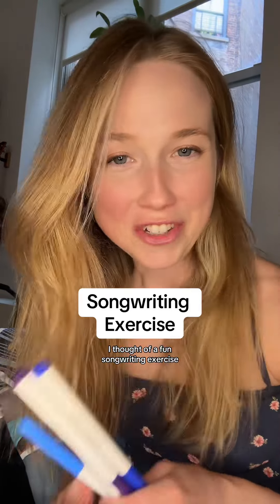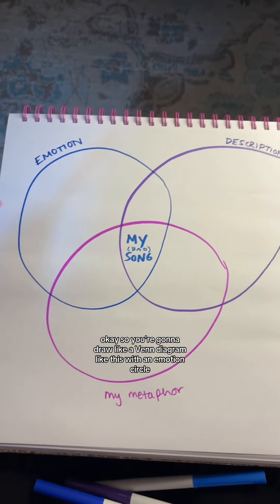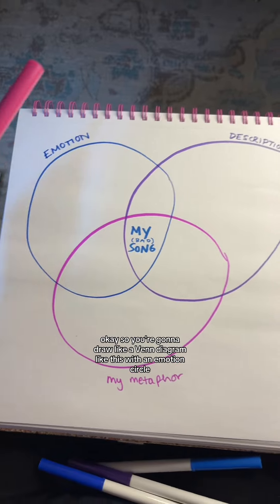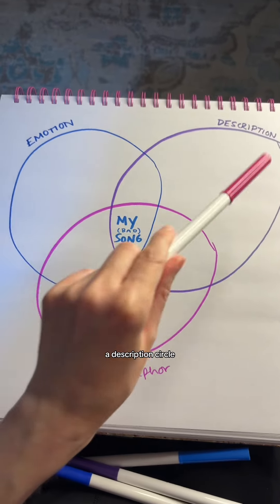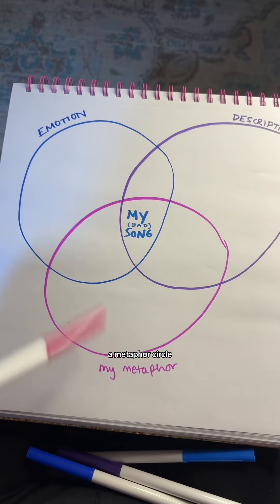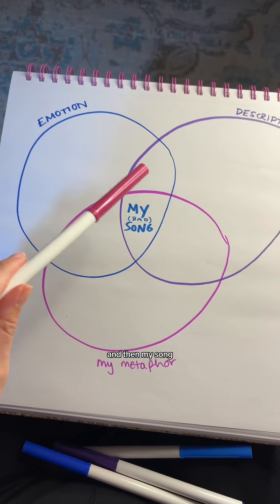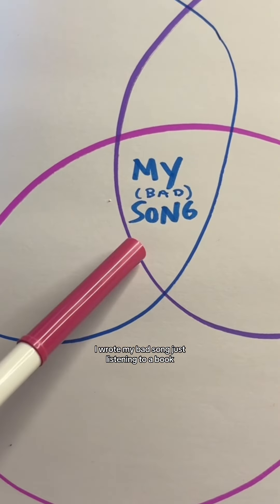I thought of a fun songwriting exercise — come play along with me! You're going to draw a Venn diagram with an emotion circle, a description circle, a metaphor circle. And then my song — I wrote my bad song.